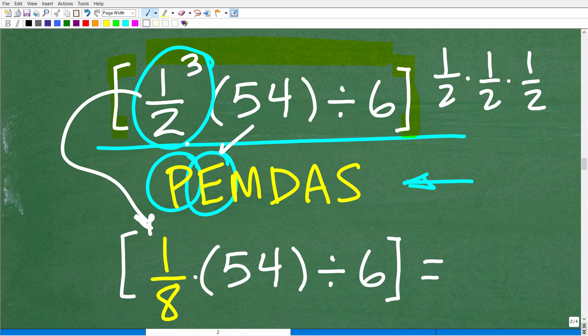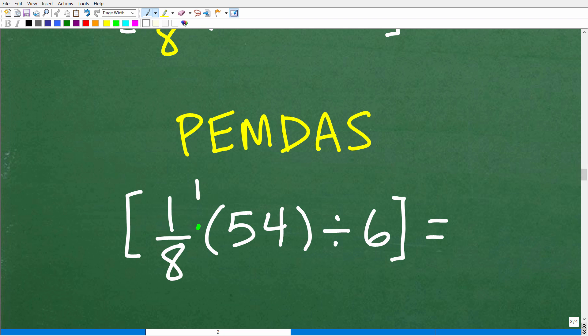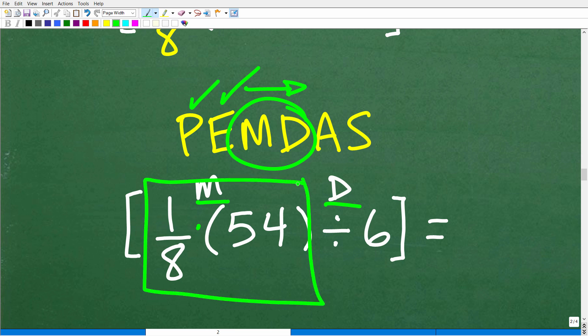So, now we took care of our exponents or powers, and we're down to the last two remaining operations here, and that is what? Well, that is multiplication and division. Okay. So, we took care of our parentheses, more or less. There's nothing really left to do here. We took care of our powers, our exponents. So, now we're down to multiplication and division. And remember, we have to do whatever we see first from left to right. So, that's going to be multiplication. So, we need to figure out what 1 eighth times 54 is equal to. Once we get this answer, all we have to do is divide that by 6, and then we will be done.